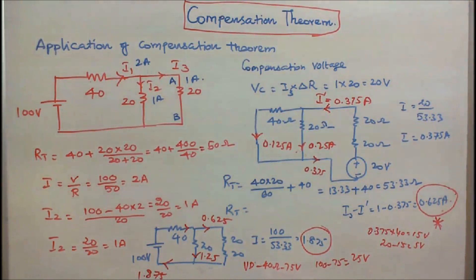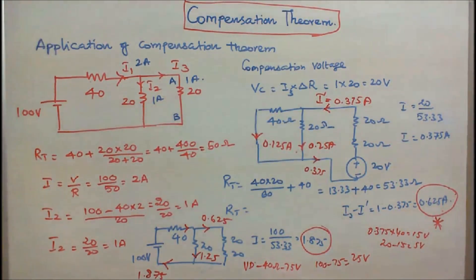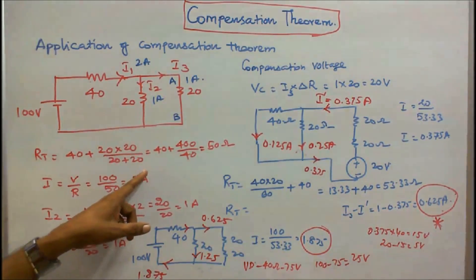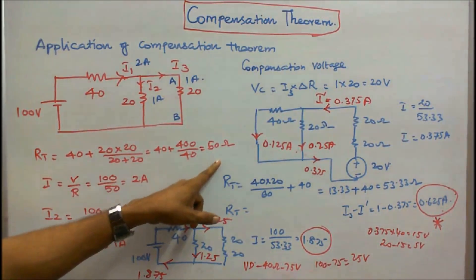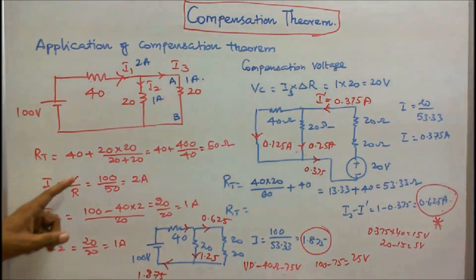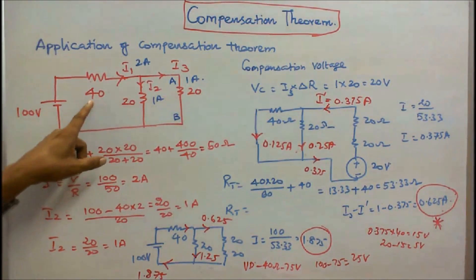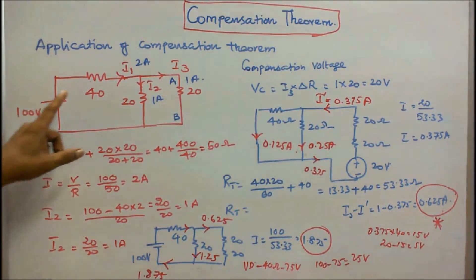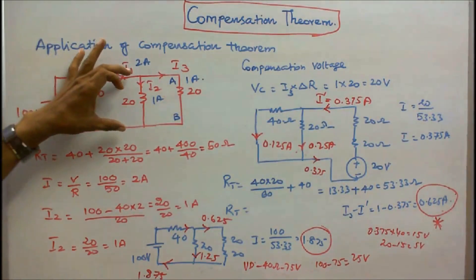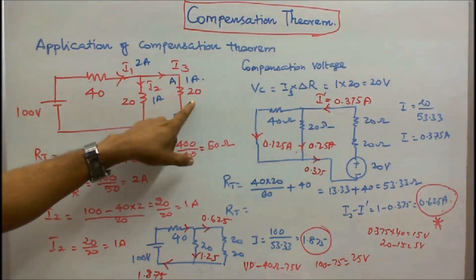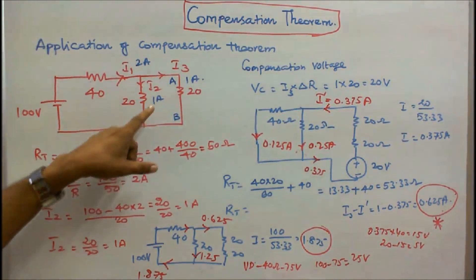The next problem has three resistors: 40 ohm, 20 ohm, and 20 ohm, with a 100 volt source connected as shown in the figure. First step: find the total resistance. The total resistance is 40 plus the parallel combination of 20 and 20, which is 20 times 20 divided by 40, giving 40 plus 10 equals 50 ohms. Current I equals 100 by 50 equals 2 amps through the 40 ohm resistor. Voltage drop across 40 ohm is 80 volts, so remaining voltage is 20 volts across the parallel 20 ohm resistors. Each branch carries 20 by 20 equals 1 amp, so current into the junction is 2 amps and current leaving is 1 plus 1 equals 2 amps.